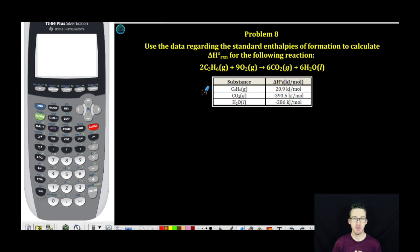Hey, what's up my chemistry people? It is Mr. Boylan. As we look at problem number eight, it says use the data regarding the standard enthalpies of formation to calculate the enthalpy change for the following reaction. We're given a balanced chemical equation and then we're given this chart that lists out a bunch of these enthalpies of formation.